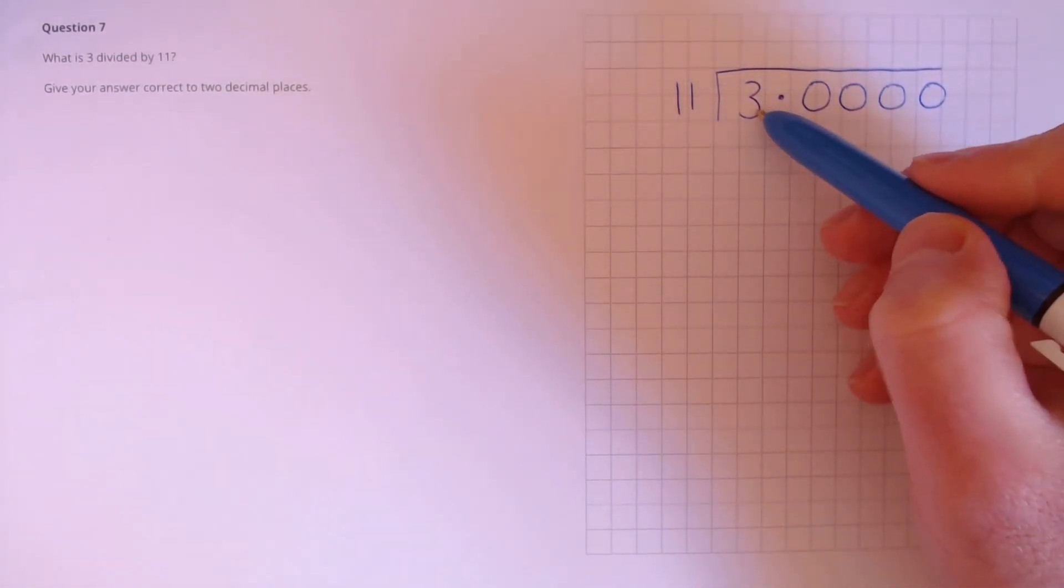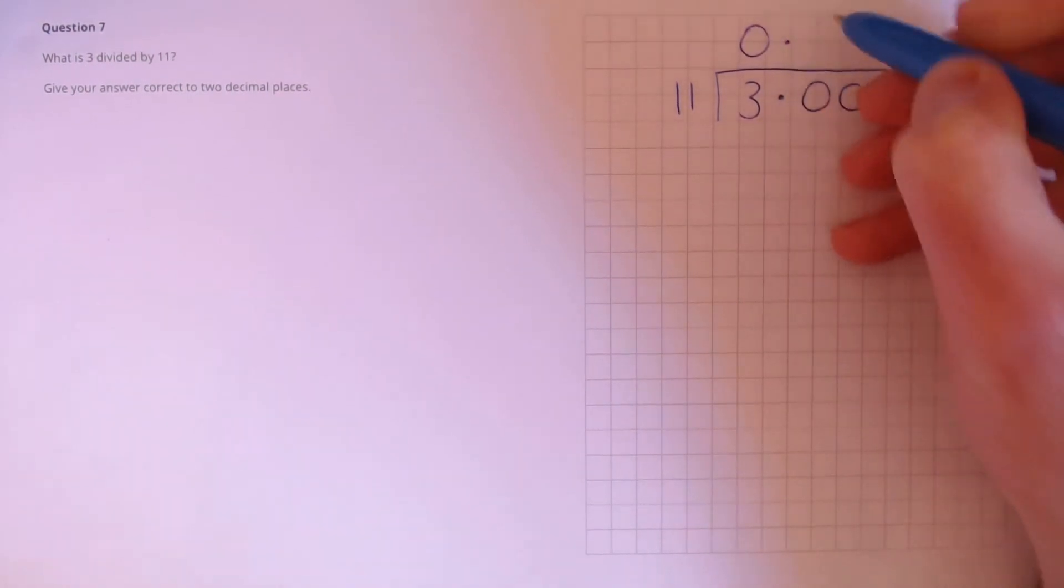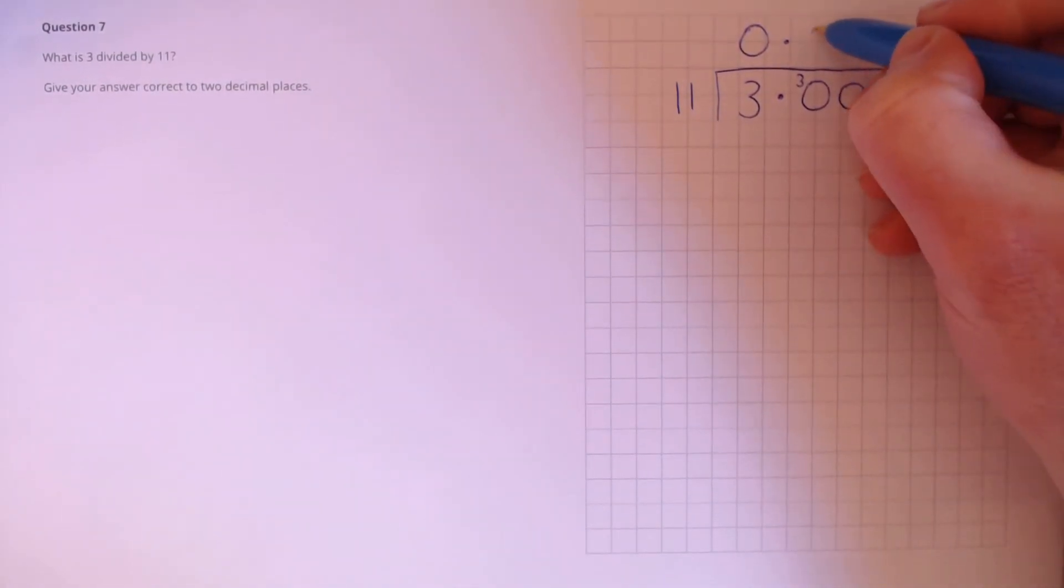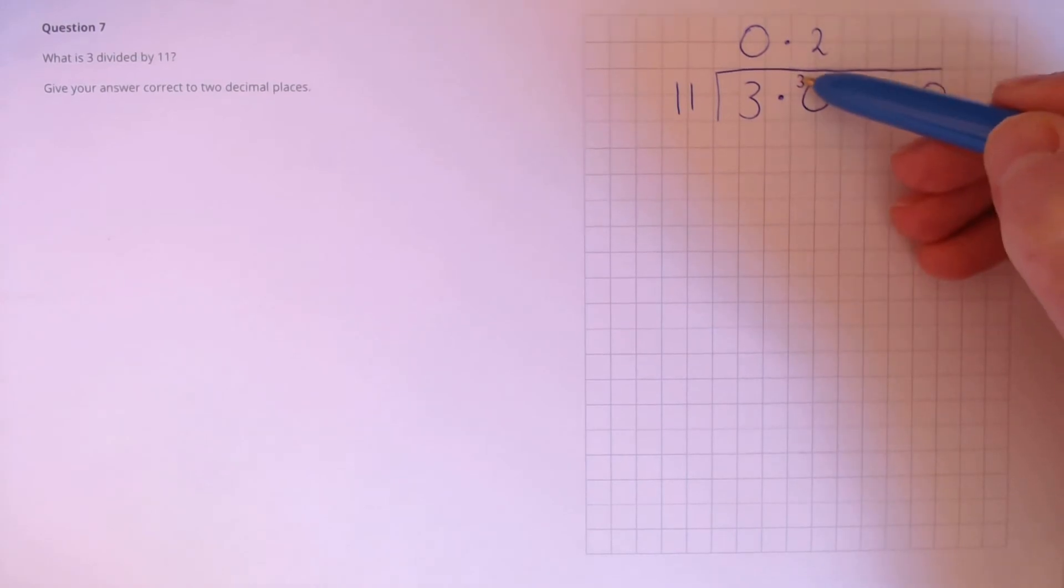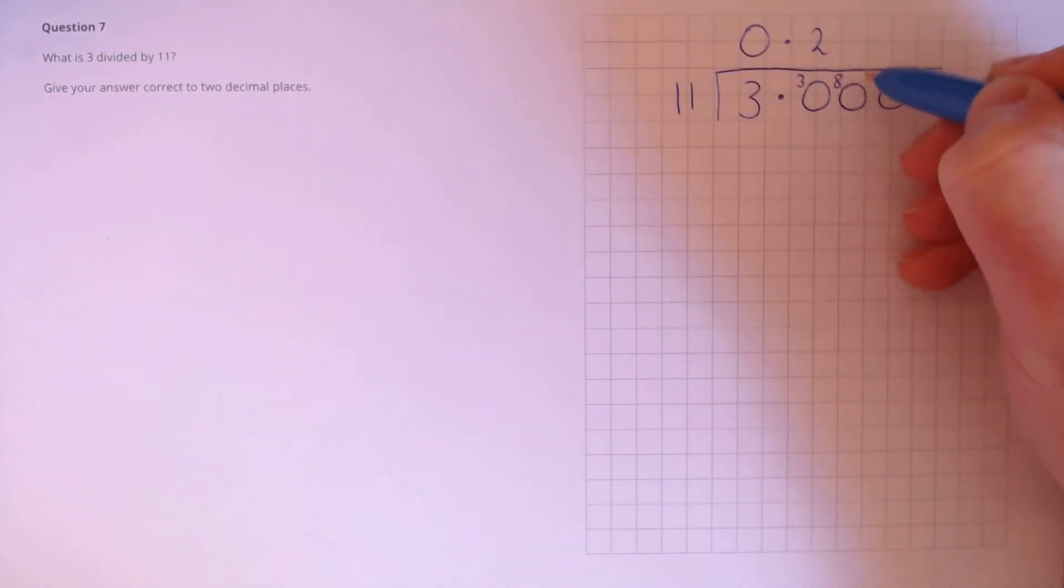First, 11s into 3. So, 3 divided by 11, that doesn't go. And we carry over our 3 to here. So, 30 divided by 11, that goes twice at 22. So, we take our 30, take away the 22, which is 8, and that's our remainder to carry over.